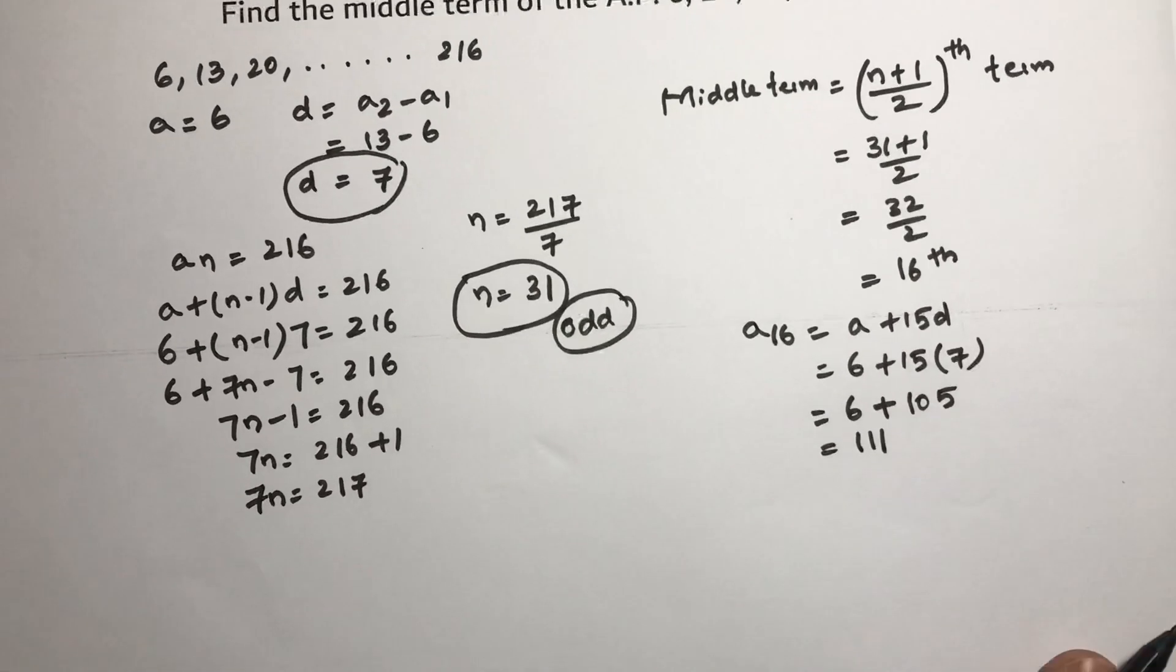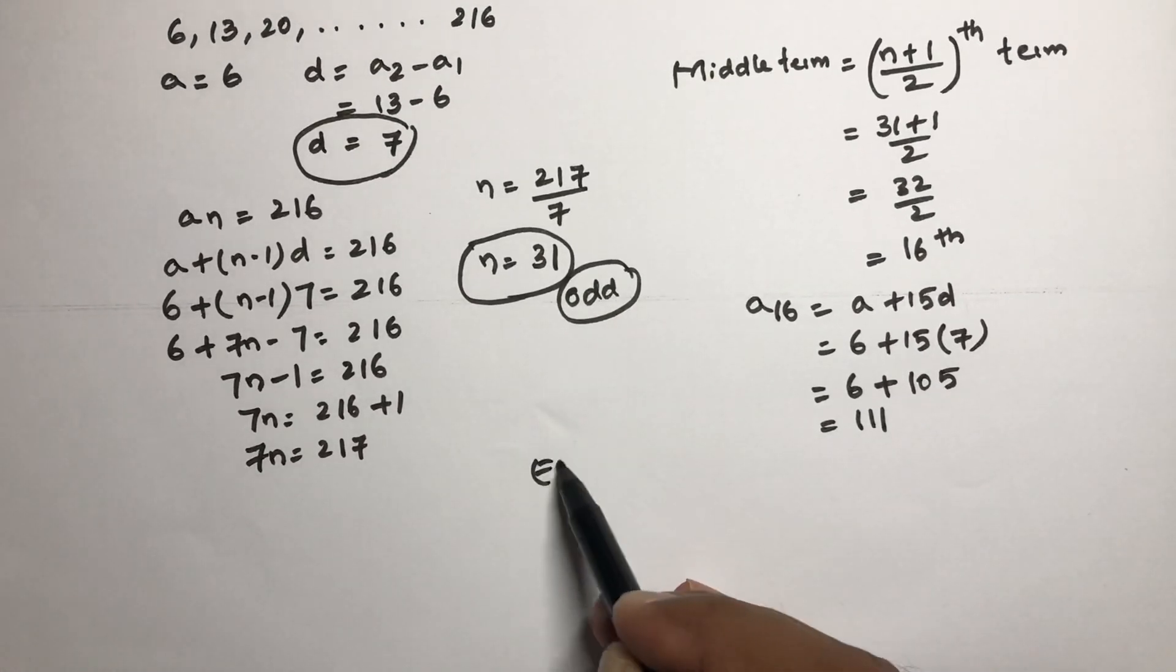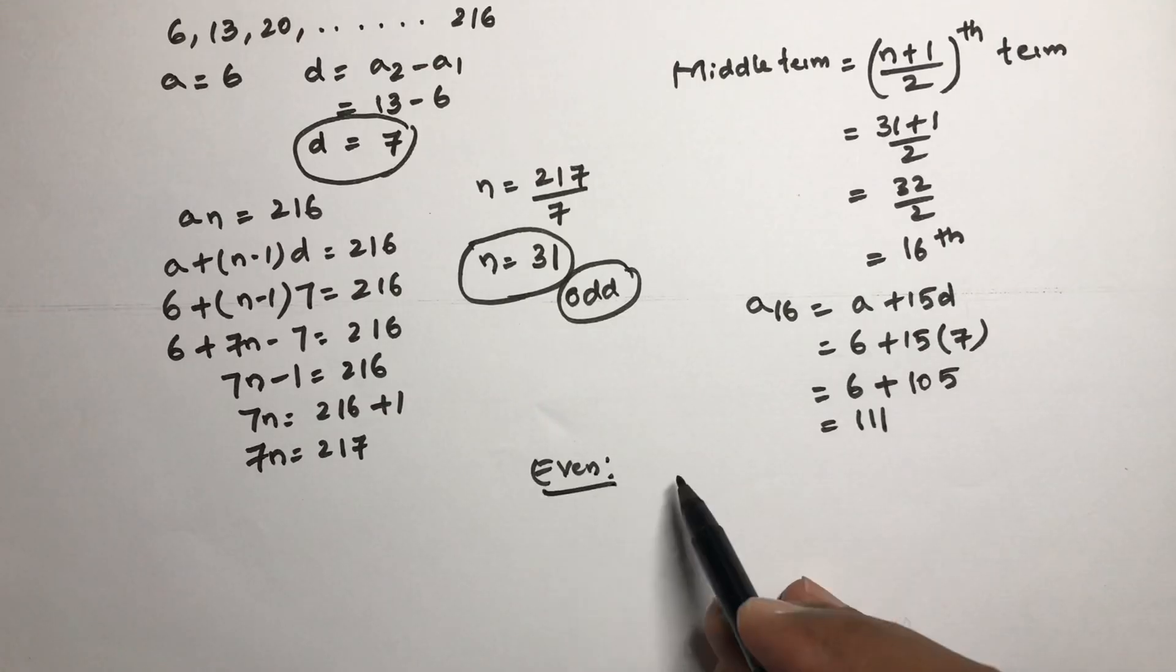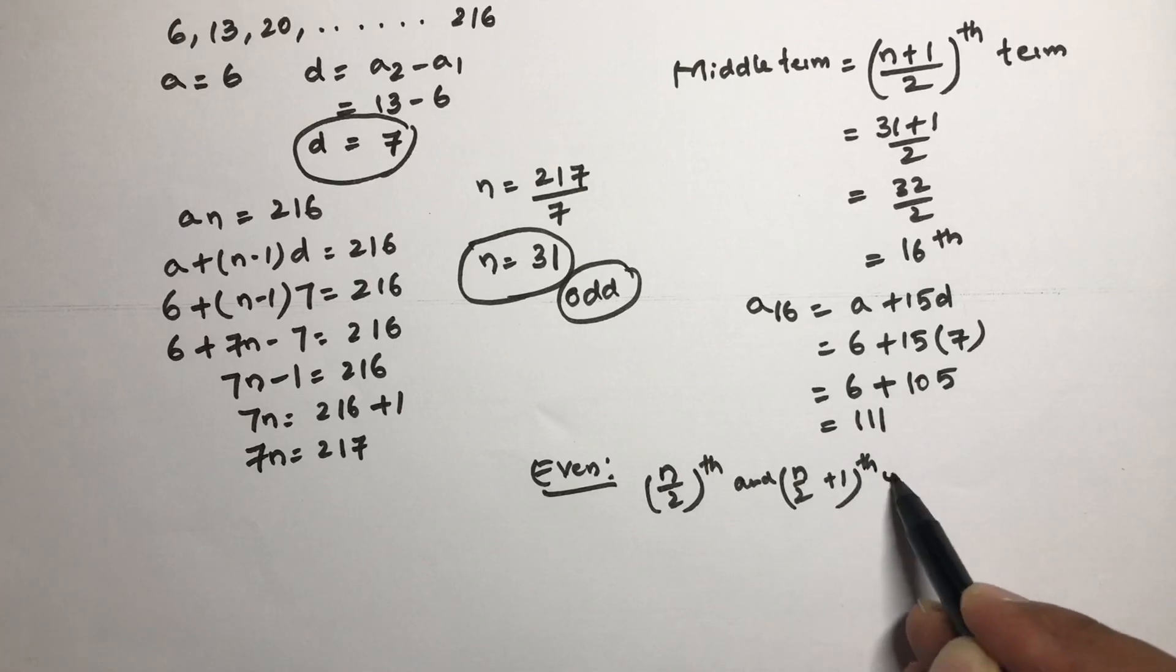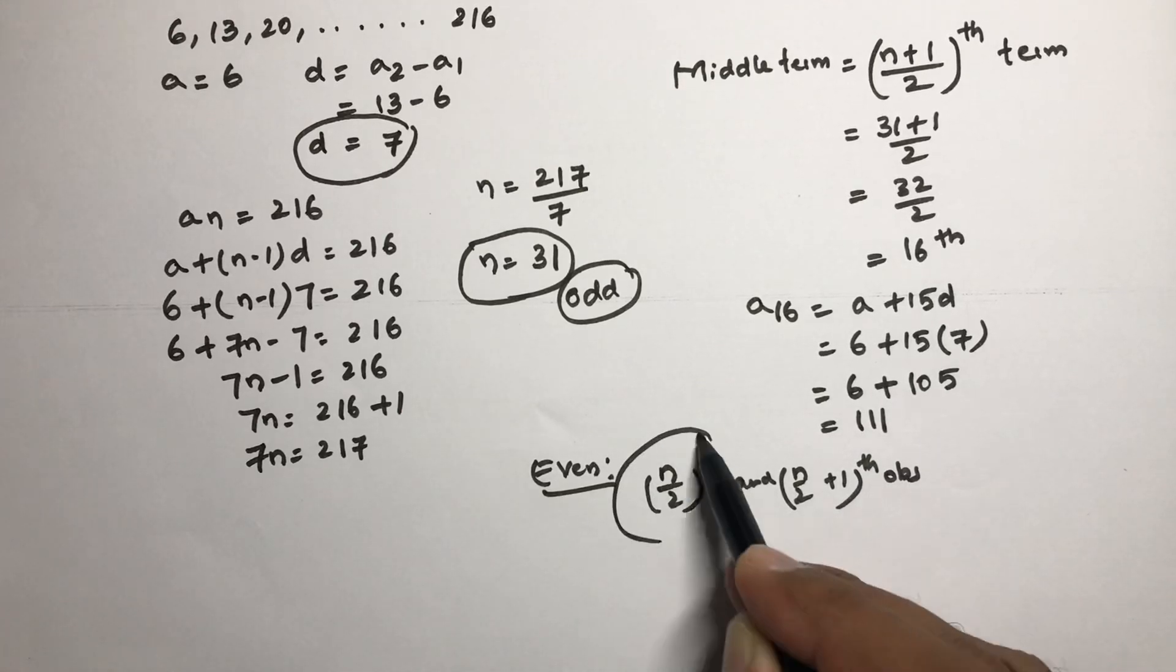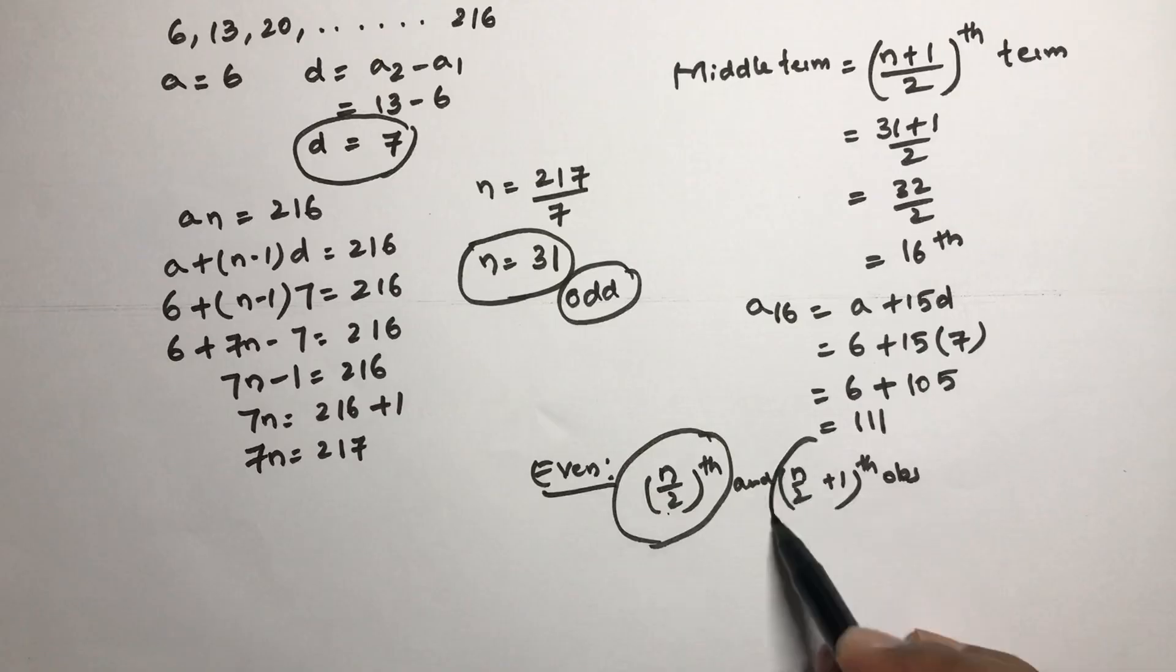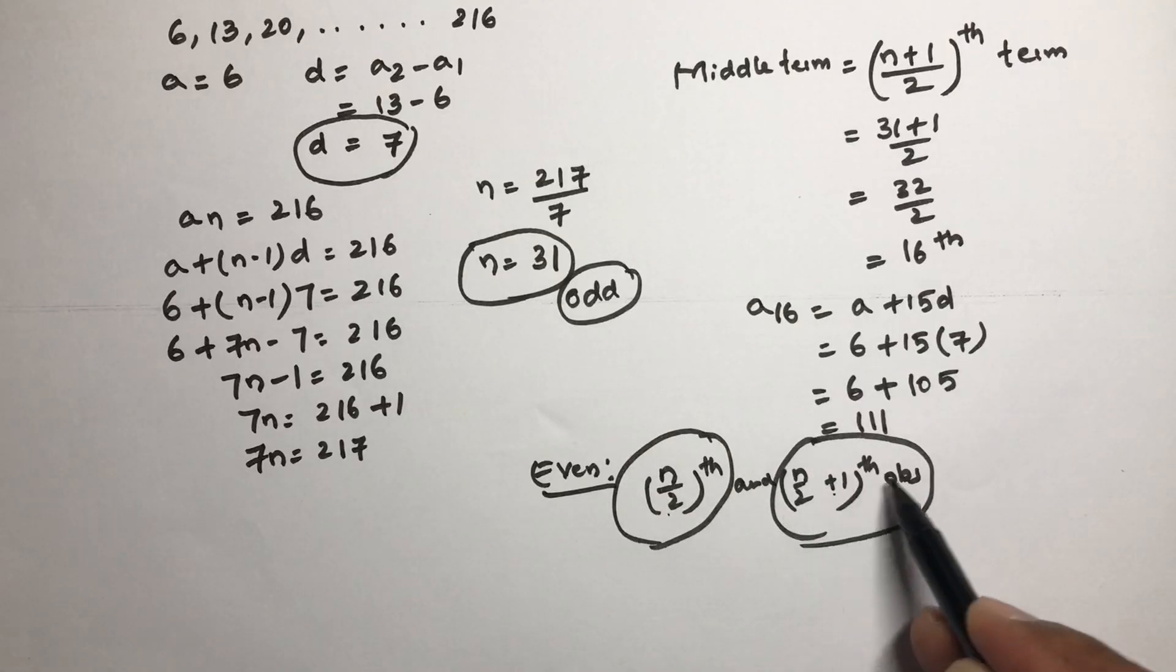For even n, the two middle terms are the n/2 th and (n/2 + 1)th observations.